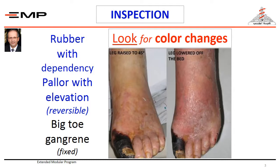In fact, pallor is a constant sign in acute ischemia, where limbs are classically pale or even cyanosed and cold. On the other hand, chronically ischemic limbs may become pale with slight elevation.